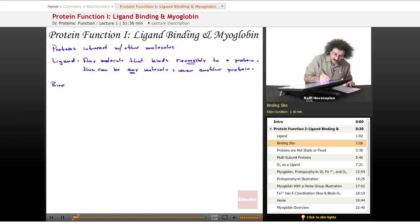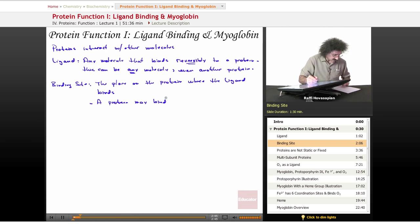Now the binding site, it's exactly what you think it is. It's the place on the protein where the ligand binds. A protein may bind several ligands at several sites. So again, we're not putting any restrictions on this. We can have one binding site, two binding sites, 37 binding sites, whatever is necessary for that protein to function and do what it does.